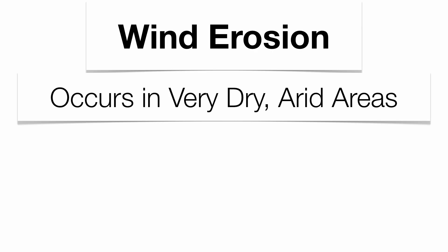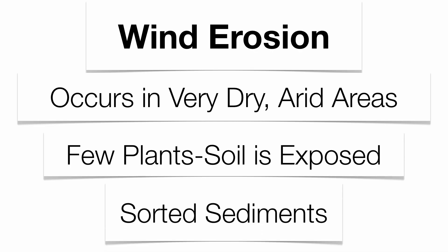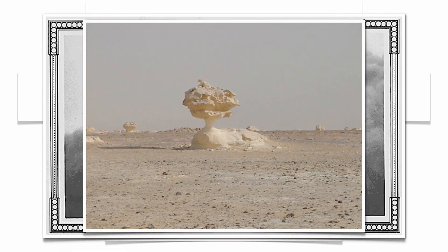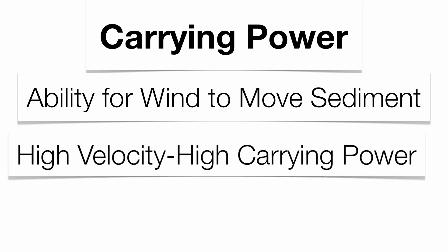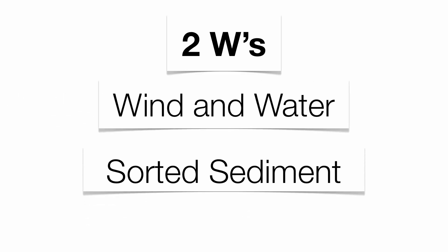That leads us into wind erosion. Wind and water erosion are very similar in terms of their erosional capacity because they're both fluids. Wind erosion can occur in areas where there's not a lot of plant life to anchor down the soil — very dry, arid areas like deserts. You need to have the soil exposed to the atmosphere for wind erosion to take place. This image shows a dust bowl back in the Great Depression — a tremendous amount of wind erosion. The carrying power of wind is very similar to that of water: high velocity means high carrying power, low velocity means low carrying power. Remember the two W's — wind and water — both give you sorted sediments.